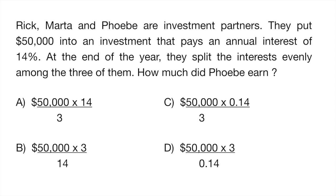All right so Rick, Marta, and Phoebe are investment partners. They put $50,000 into an investment that pays an annual interest of 14 percent. At the end of the year they split the interest evenly among the three of them. How much did Phoebe earn?